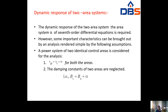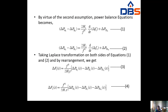For the dynamic response of the two-area system, a seventh-order differential equation is required. However, important characteristics can be brought out by simplified analysis using the following assumptions: a power system of two identical control areas is considered; tau GT equals tau T equals zero for both areas; and the damping constants of the two areas are neglected so that B1 equals B2 equals zero. By virtue of these assumptions, the power balance equations become delta PG1 minus delta PD1 equals 2H1/F0 times d/dt of delta F1 plus delta PTL1.